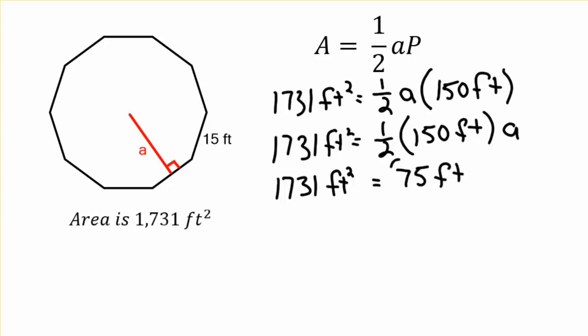Now, I want to get a by itself. So, I have to divide by 75 on both sides. And remember, on the other side, it says feet squared. What's going to happen to feet? Well, I have 1,731. I'm going to treat feet like they are a variable. Feet squared is feet times feet. So, let's go ahead and erase this, make this all go away.